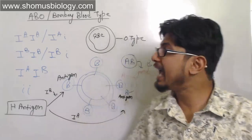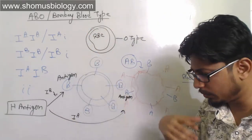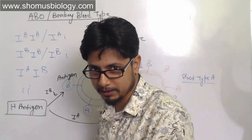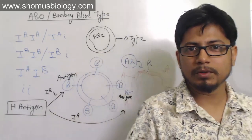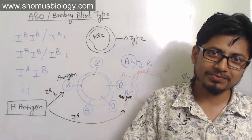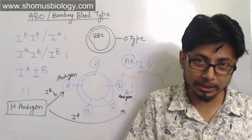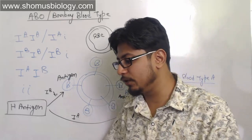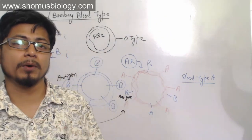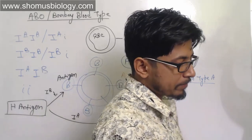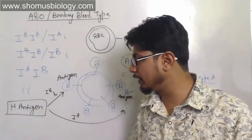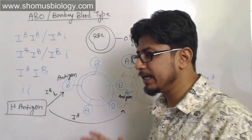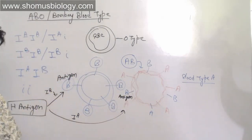Because there is no antigen present on the surface of their red blood cells, Bombay blood type people can donate blood to any other blood type — A, B, AB, or O — making them universal donors. However, they can never receive blood from anyone except another Bombay blood type person. That's why it is very difficult when a person with Bombay blood type loses blood; it becomes a serious matter of concern.